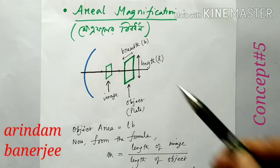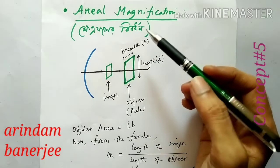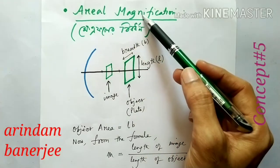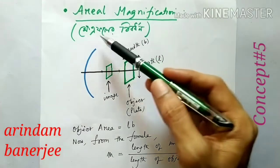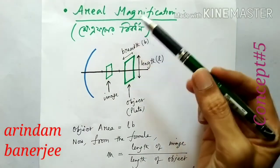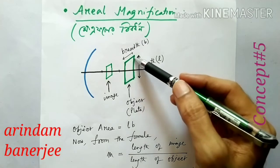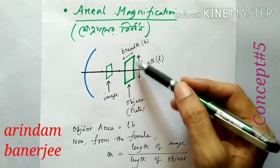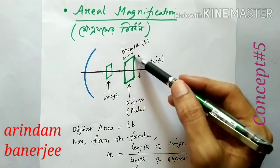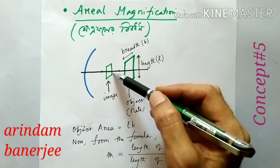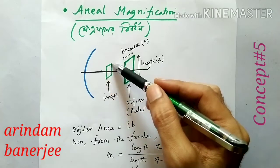Another important concept is areal magnification. Area means the area of a plate. Here, the object is two-dimensional, and the image will also be two-dimensional.